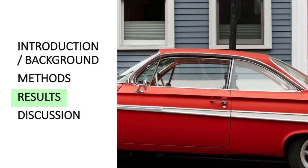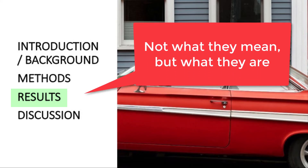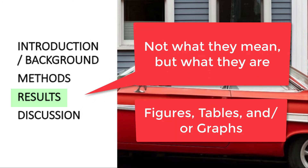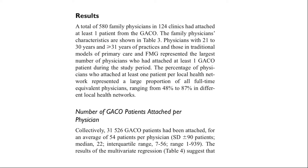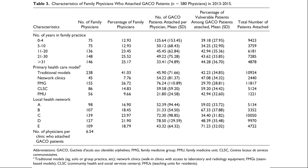The results present not what the results mean, but what they actually are — all the data in the study along with figures, tables, and graphs. The first part of results will often describe the participants: for example, how many and who they were. Here we see how many participants were involved and their characteristics. This is a good example where a table provides a lot of information in a concise manner.